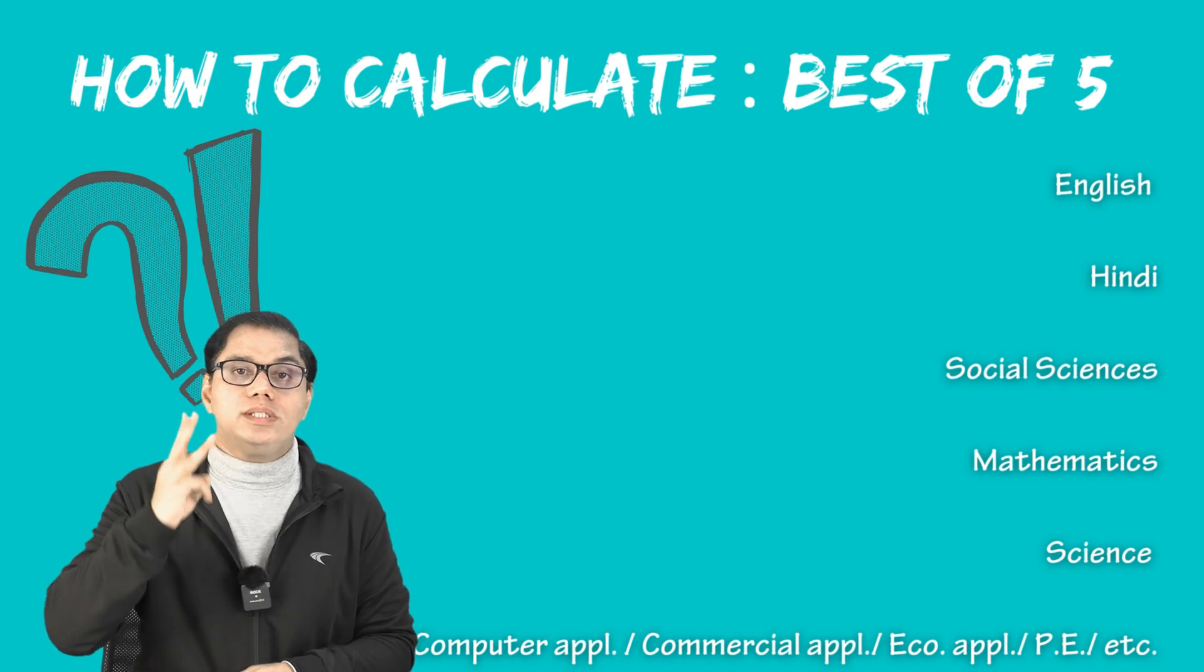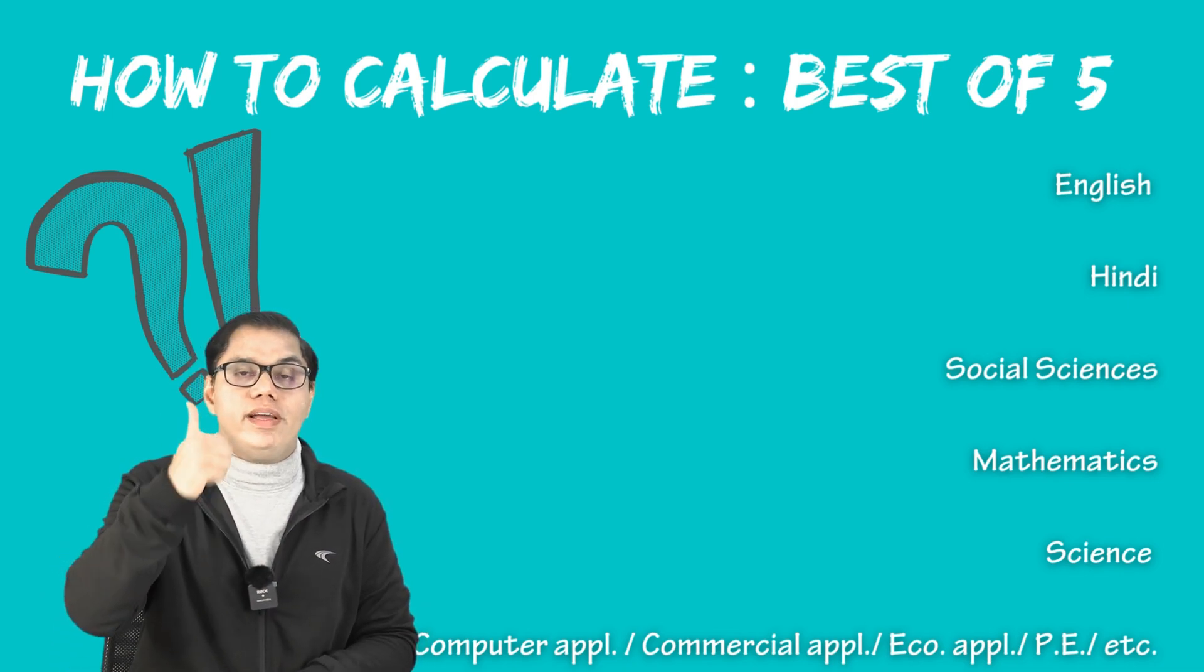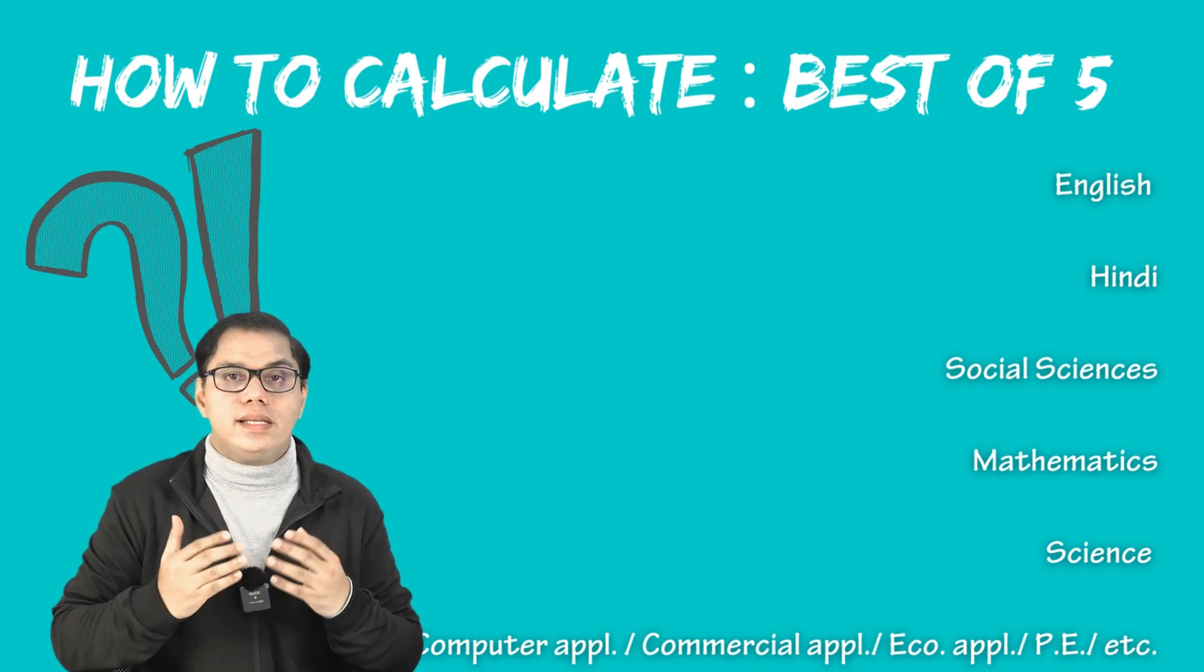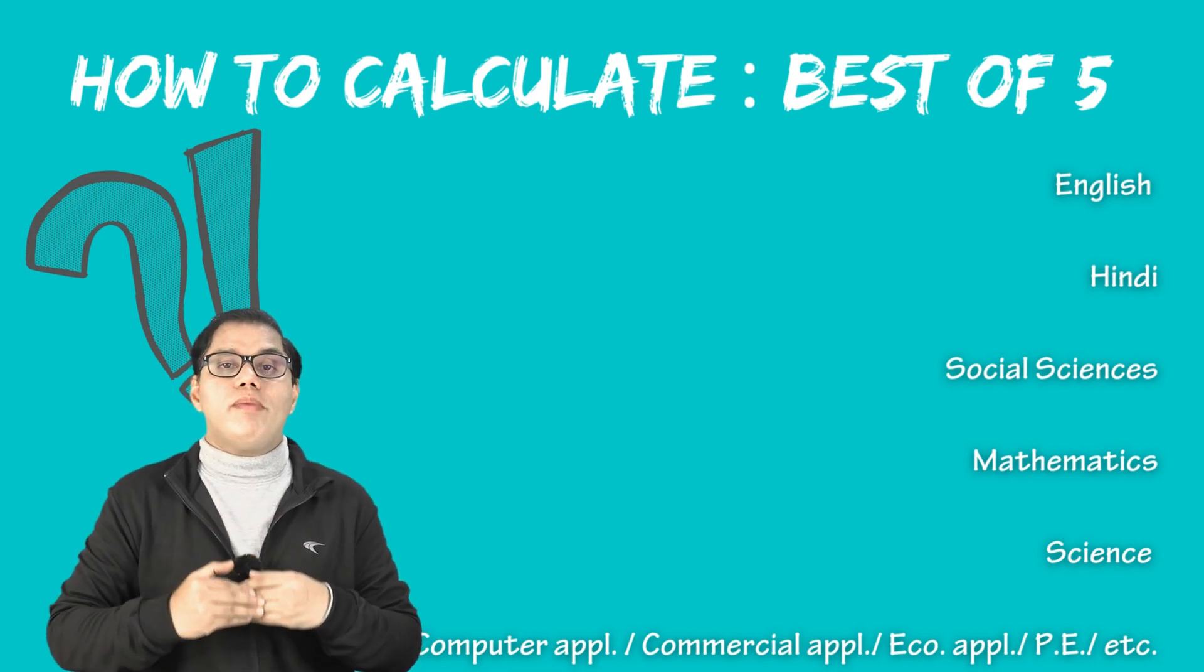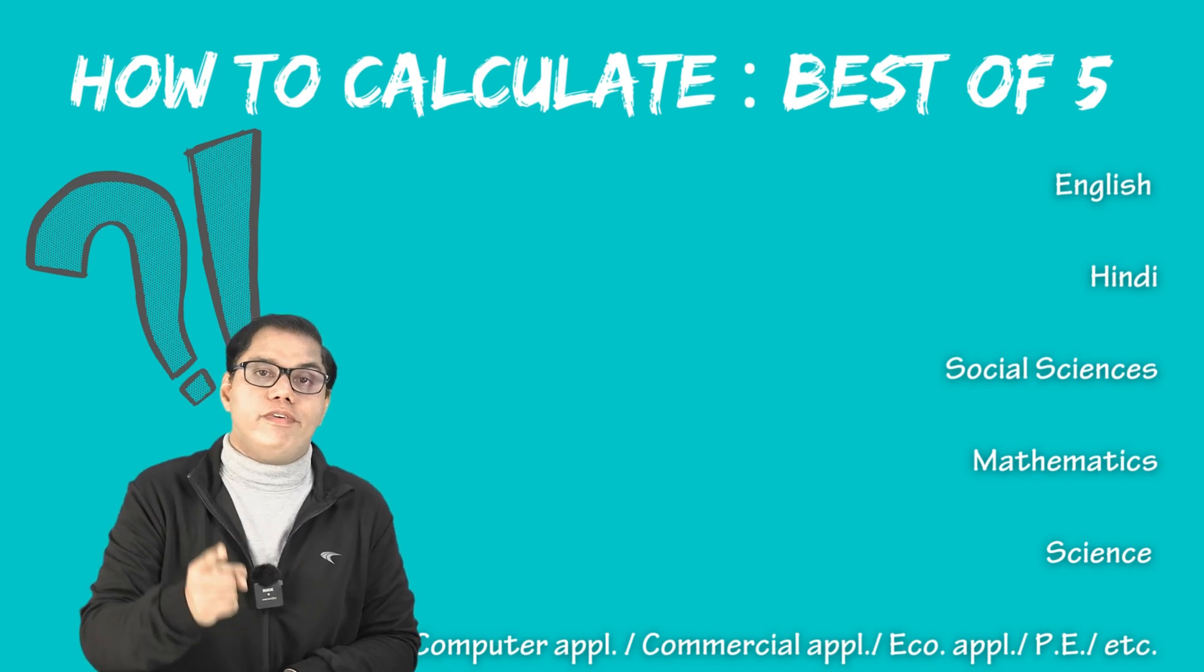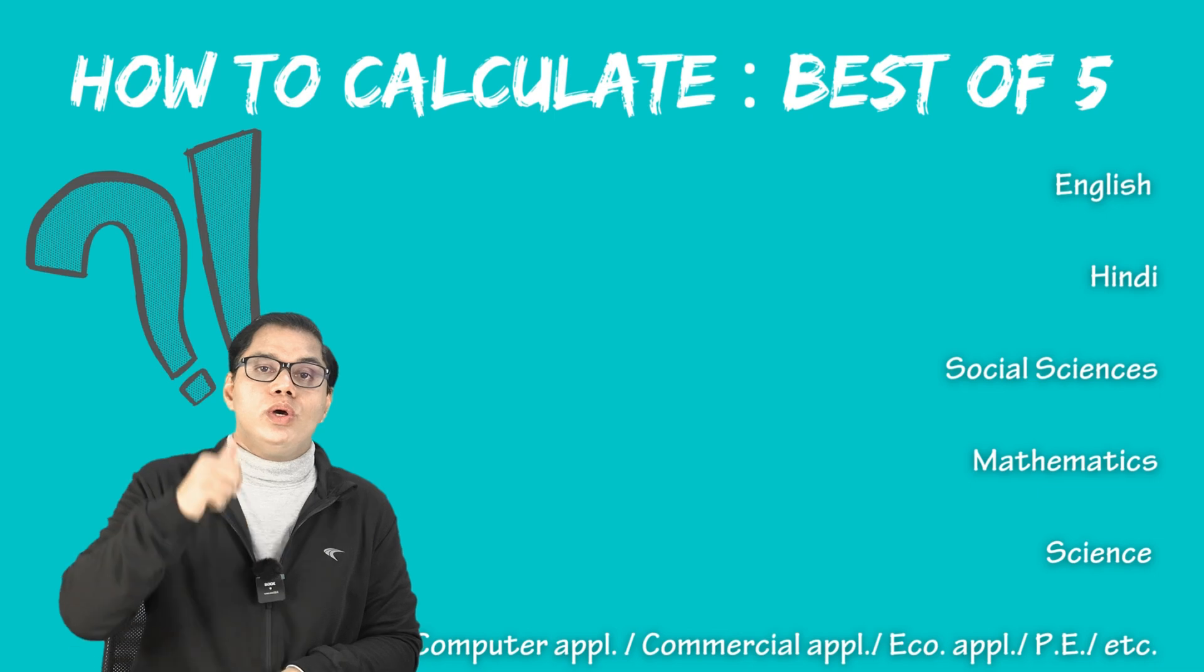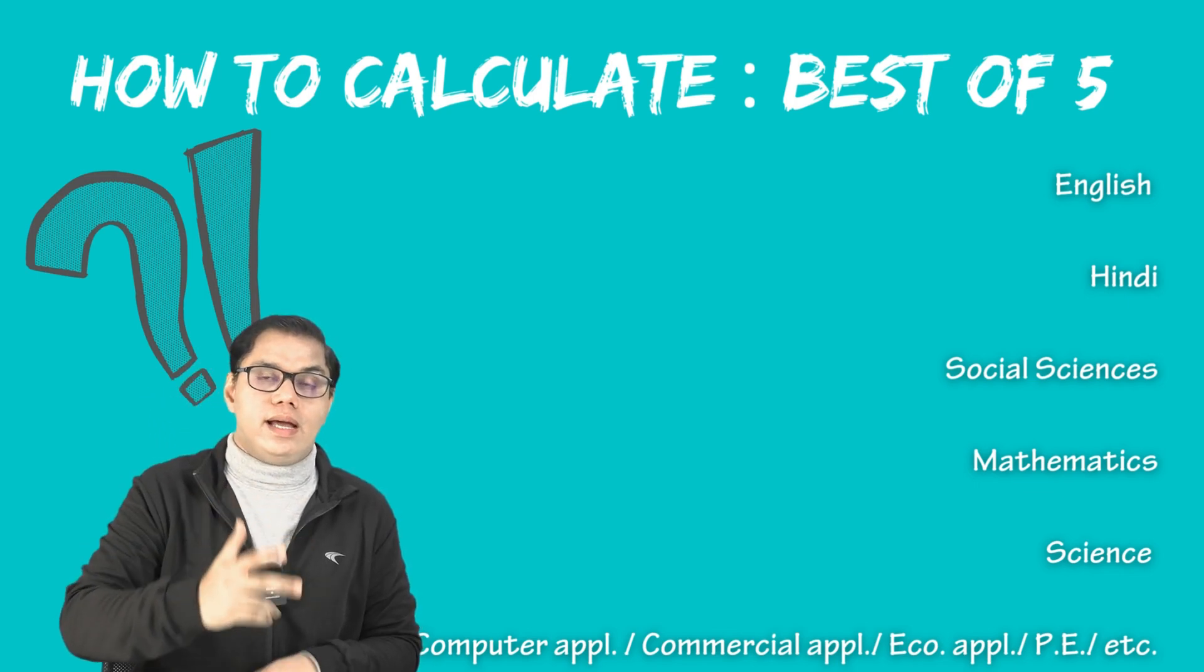Then we have second subject which is a stand alone subject which is Hindi. Third subject is social science which is combination of your history civics and geography paper. Next is again a stand alone subject which is mathematics followed by science. This is combination of three different papers. Yes, science is equivalent to your physics plus chemistry plus biology.